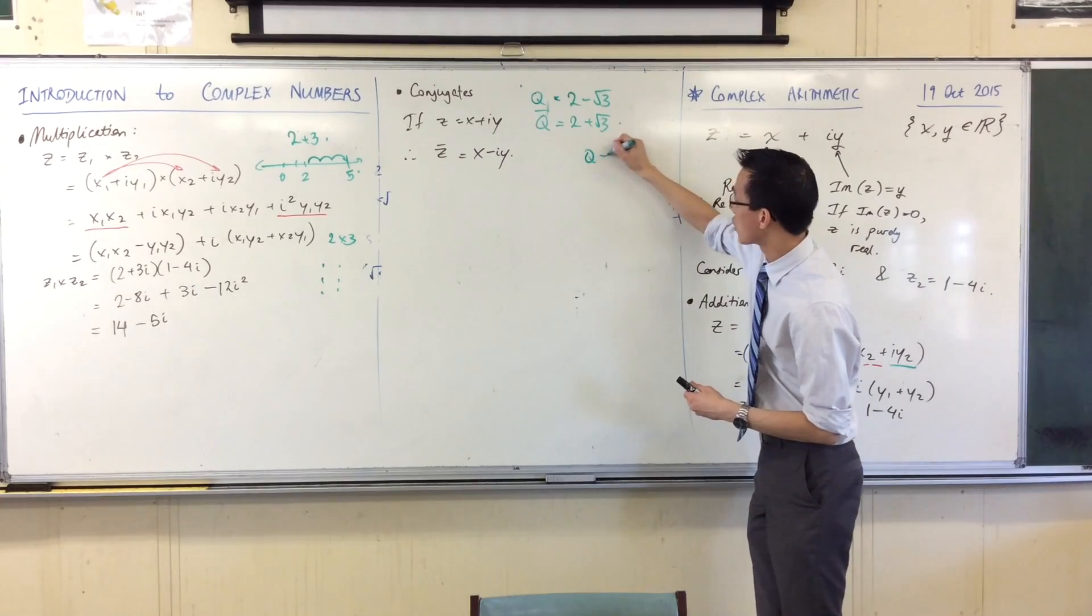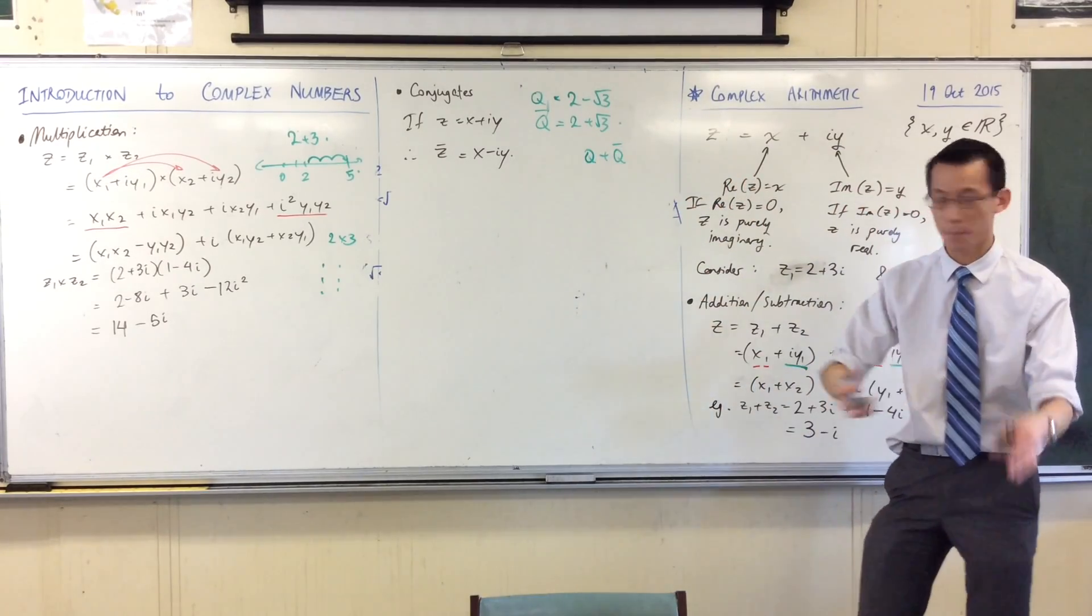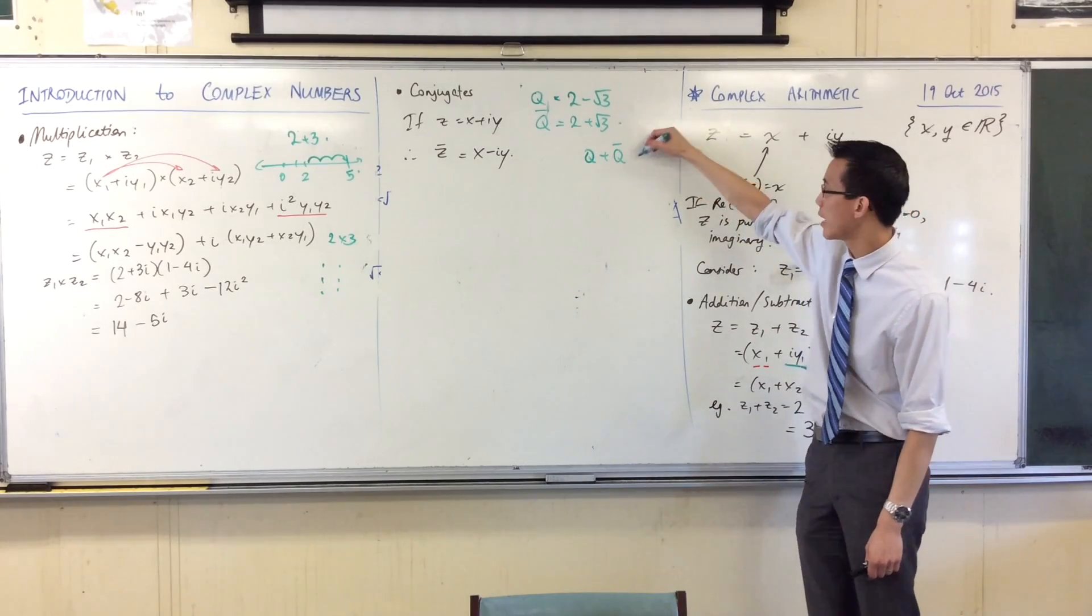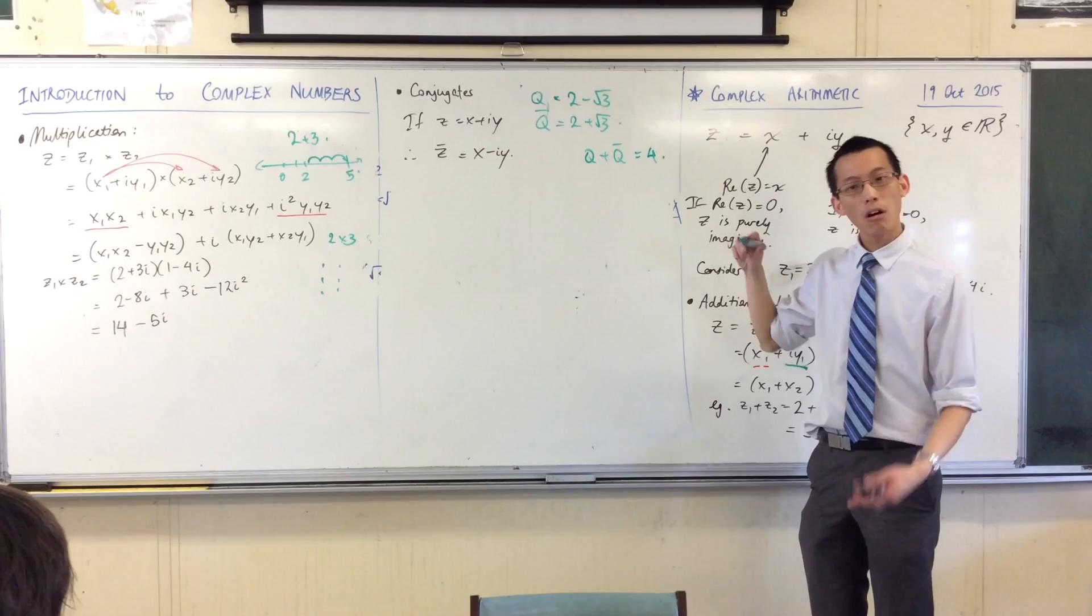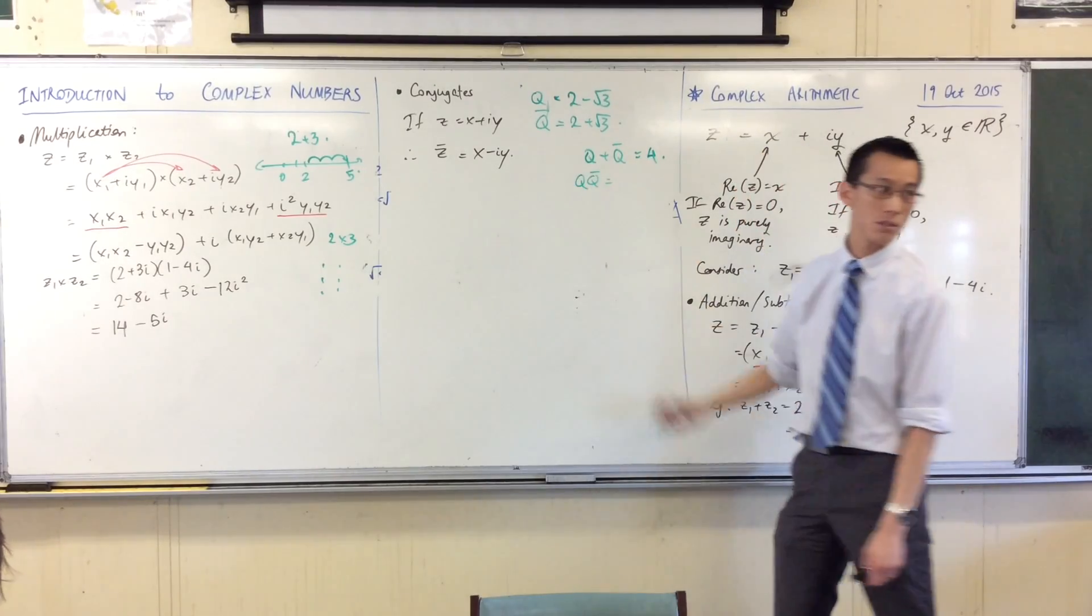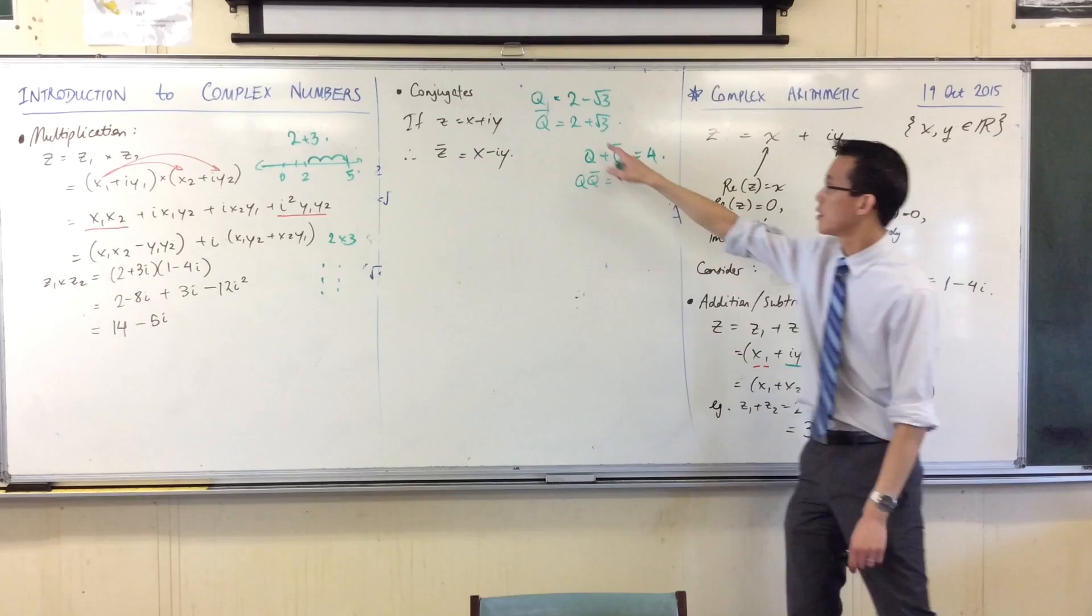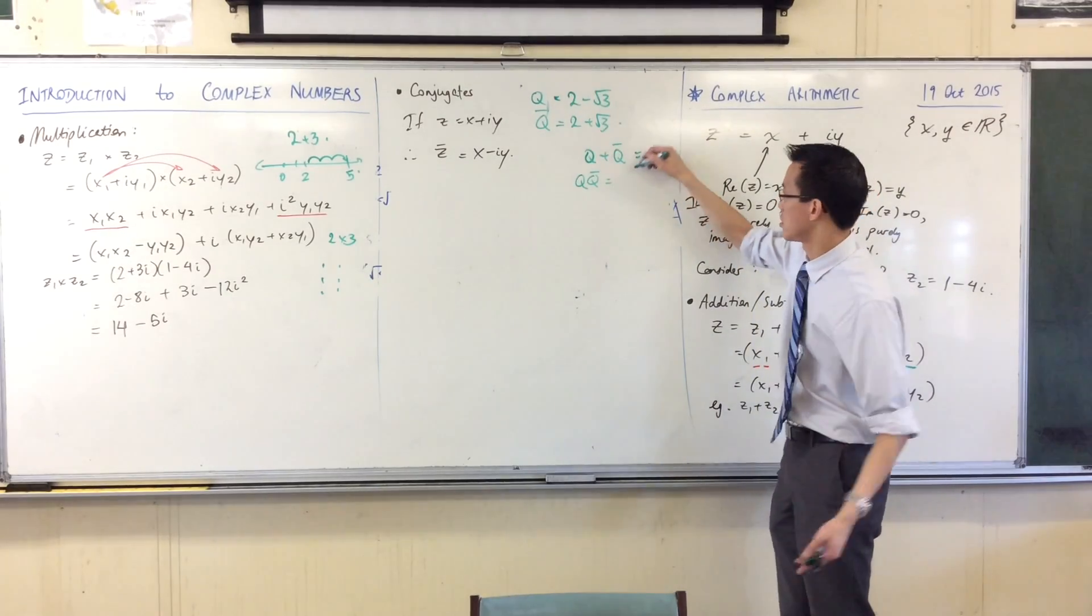If I add q and q-bar together, if I add a number to its rational conjugate, what do I get? Like in this context, what do I get? I just get four, right? Not only if I add them, but if I multiply them, which is what you're more used to doing, what do you get? You're going to get four take away three because of difference of squares, which is just one.